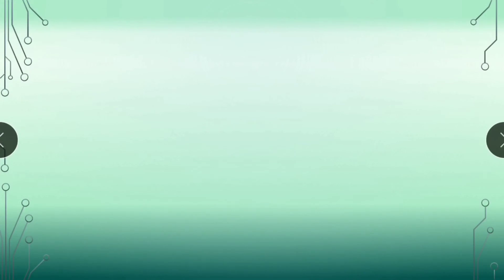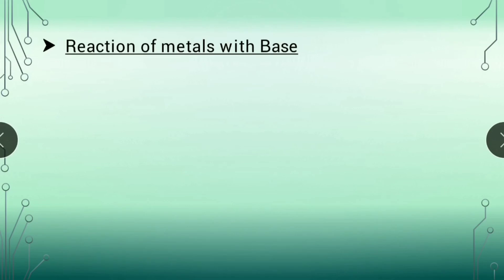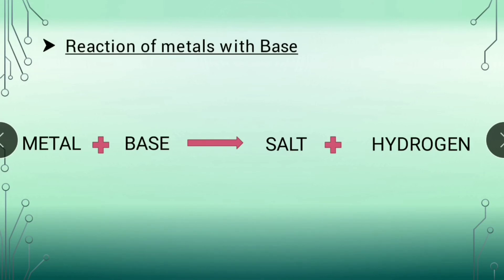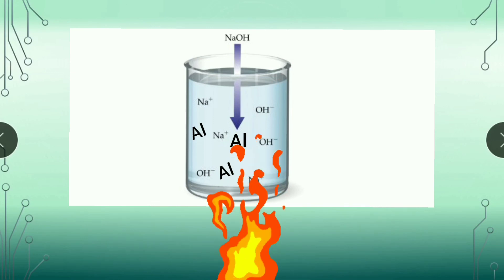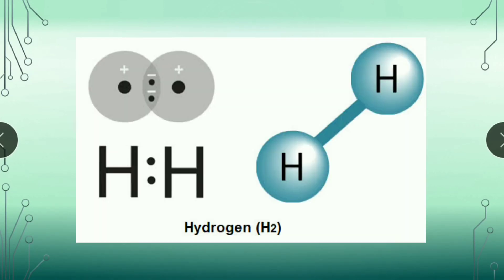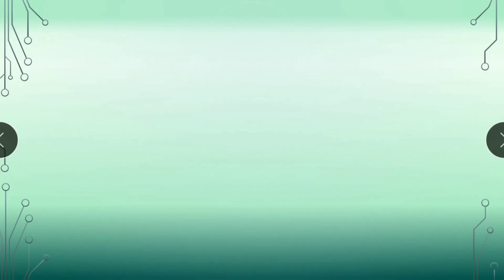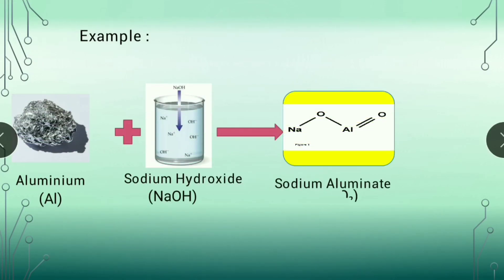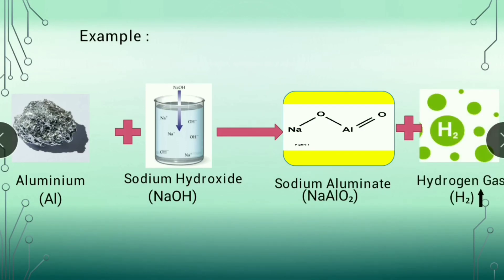Now let's see the reaction of metals with bases. Some metals react with bases to form salts and hydrogen gas: metal plus base gives salt and hydrogen gas. We know that aluminium is a metal and sodium hydroxide is a base. When aluminium is heated with sodium hydroxide solution, the salt sodium aluminate and hydrogen gas is formed. The equation is: Al plus NaOH gives sodium aluminate plus H2. Hydrogen is a gas and sodium aluminate is the salt.